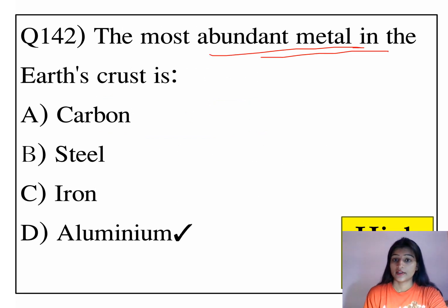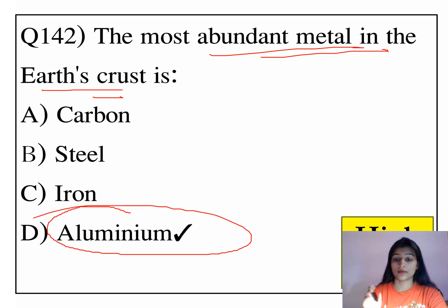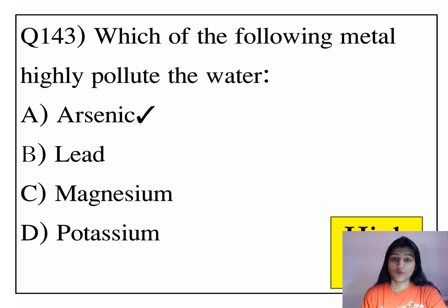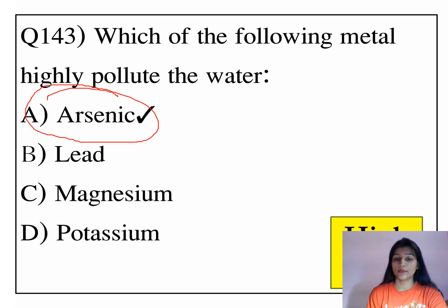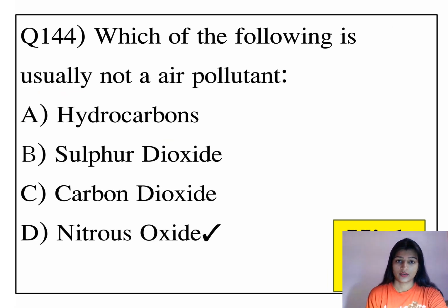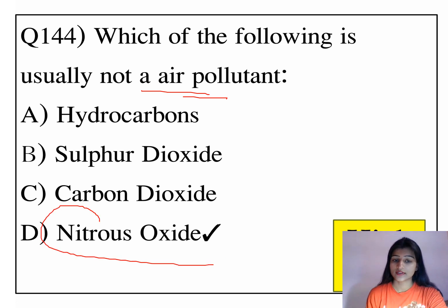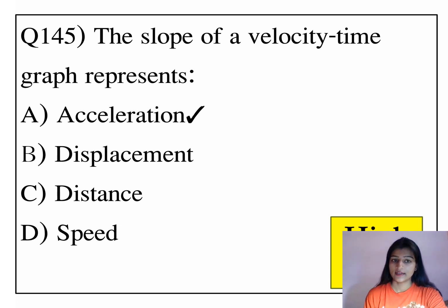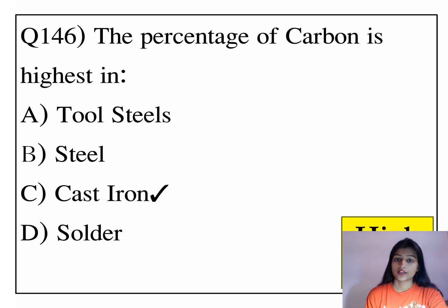The most abundant metal in the earth's crust is aluminium. Which of the following metals is found in highly polluted water? Which of the following is usually not an air pollutant? Nitrous oxide is not an air pollutant. The slope of a velocity-time graph represents acceleration. The percentage of carbon is highest in cast iron.